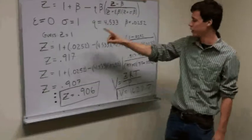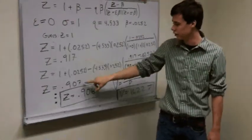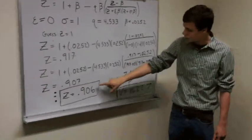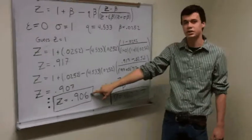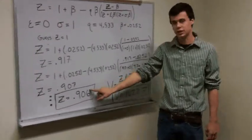We then take 0.917 and plug it back in on the right side of the equation and solve for a new Z value of 0.907. We keep doing this until the two previously calculated Z values are essentially the same. In this case, we find that Z equals 0.906.